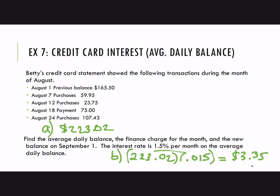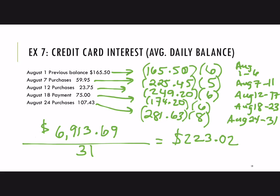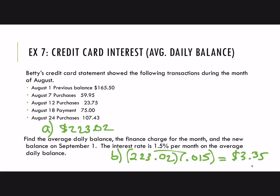The last step is to find the new balance on September 1st. We've already done the additions and subtractions for purchases and payments, and we know the balance on August 31st is $281.63. The only difference by September 1st is adding in the finance charge. So we have $281.63 plus the finance charge of $3.35, giving a new balance on September 1st of $284.98.